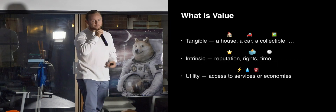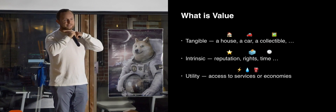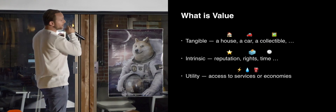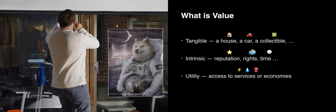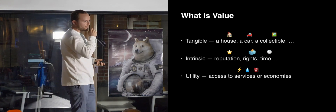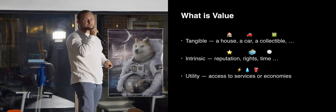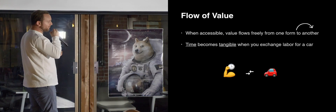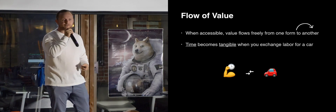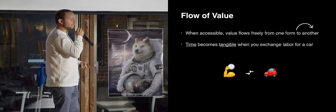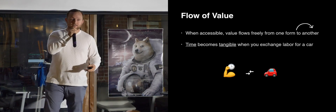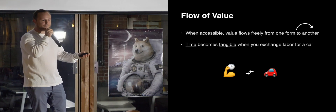Typically when you're talking about value on the blockchain, people are referring to cryptocurrency. But the blockchain can represent lots of different forms of value — tangible value like a house, a car, or a collectible; reputation; my rights or my time; or access to services or the ability to participate in some economy. When we talk about the flow of value, we're talking about accessible value. When value is accessible, it can flow freely from one form to another. My time becomes tangible when I exchange my labor for a car, and that car in turn becomes utility when I exchange it for money and can now participate in some economy.